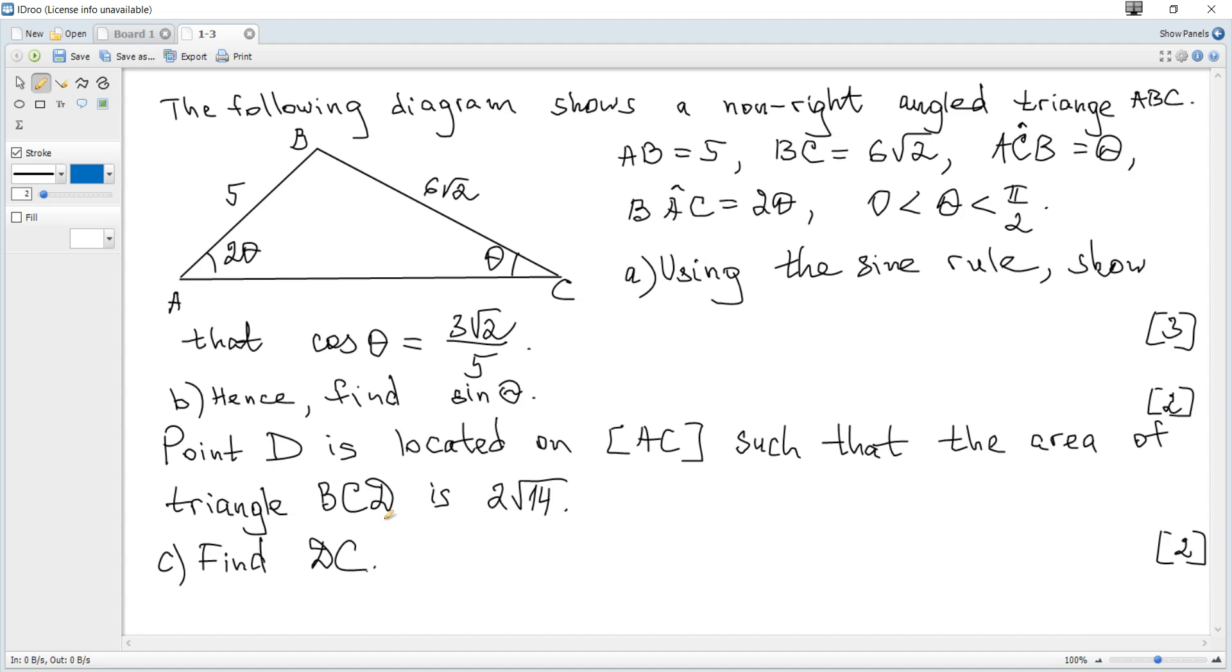The following diagram shows a non-right angle triangle ABC. AB and BC are given. Angles C and A are given. Question A: using the sine rule, show that cosine of theta is equal to this value.